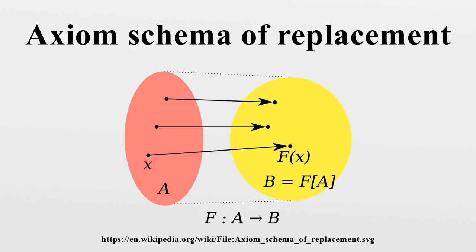The axiom schema of replacement states that if F is a definable class function as above, and A is any set, then the image F(A) is also a set. This can be seen as a principle of smallness: the axiom states that if A is small enough to be a set, then F(A) is also small enough to be a set.